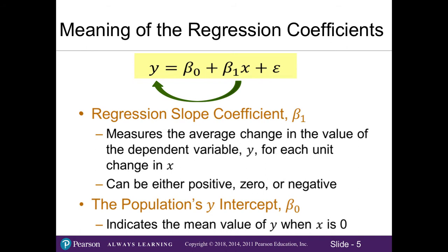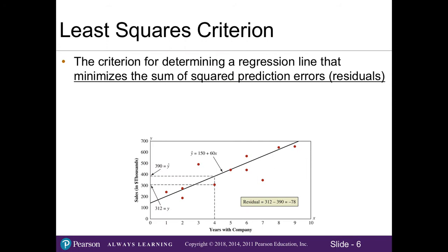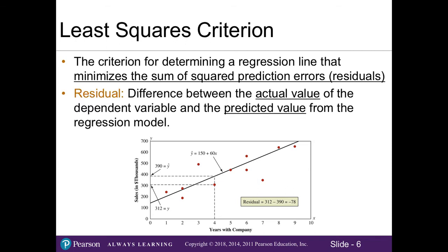The least squares criterion is how we will find the best fitting line. Here, we are trying to find a line that minimizes the sum of squared prediction errors or residuals. The residual is the difference between our actual value of the dependent variable and the predicted value from the regression model. So our regression model here in the figure is this line, and here's the regression model right here, or the equation.